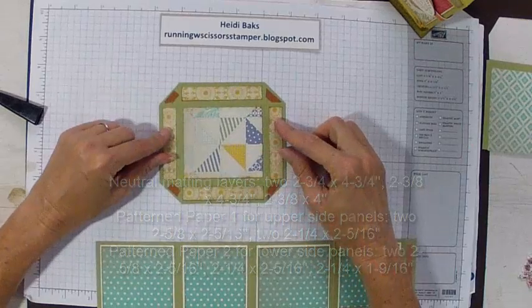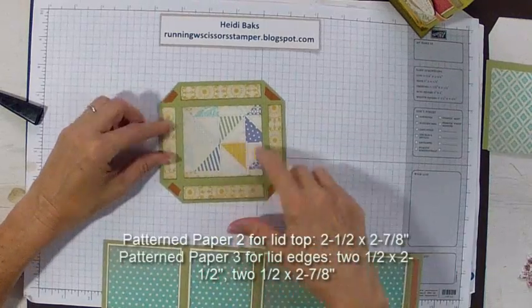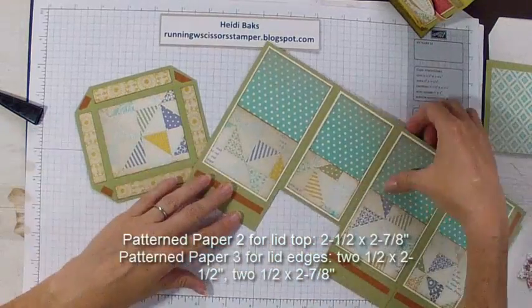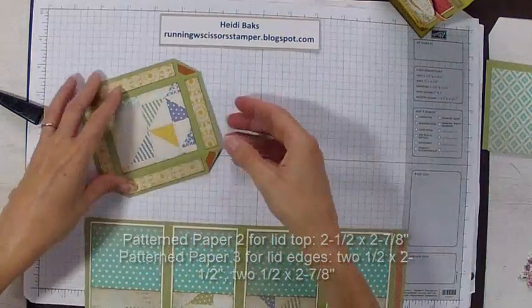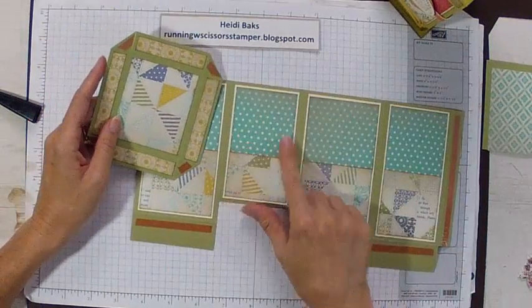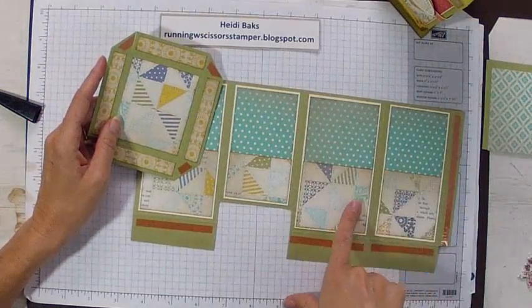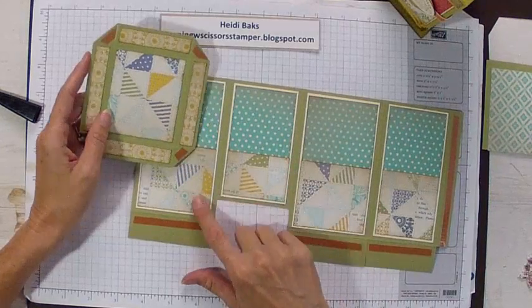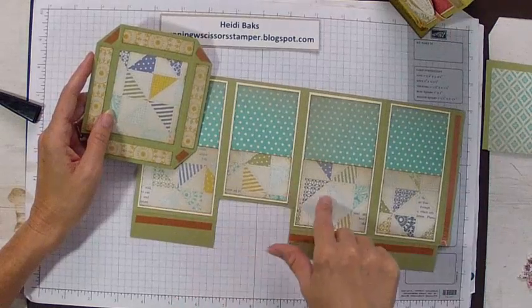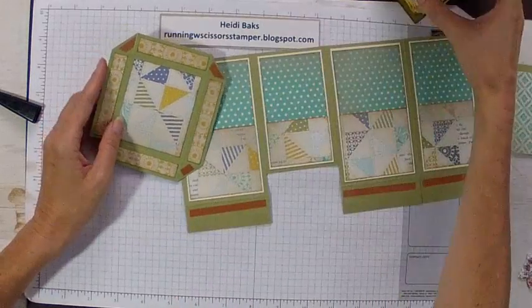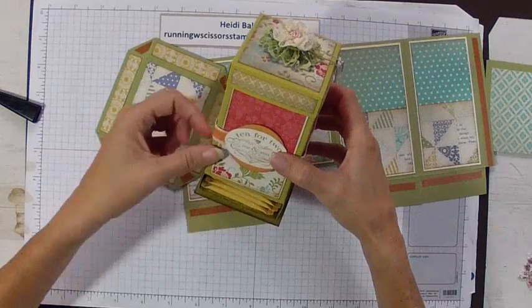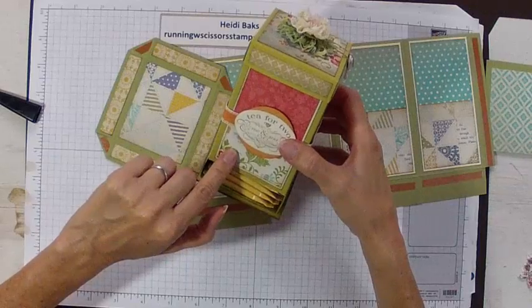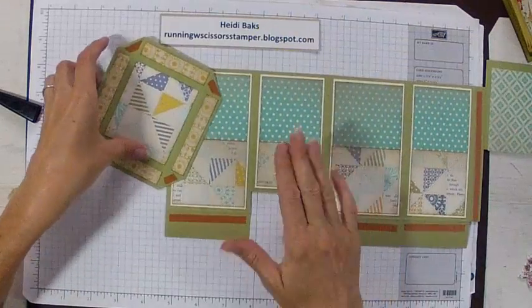And this is the lid decorated. I have coordinating paper for the top of the lid and then the sides of the lid here. You can sponge the edges of the pattern paper if you desire. I sponged here with soft suede just on the pattern paper. I didn't do the panels here. I was going for a little bit cleaner look than the previous one here. I had sponged the edges of the box, the edges of the matting layer, the edges of pattern paper. I sponged everything. But this one I went a little cleaner.